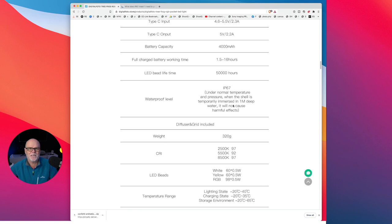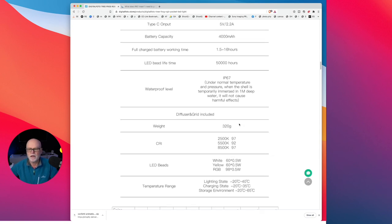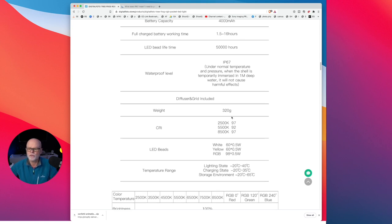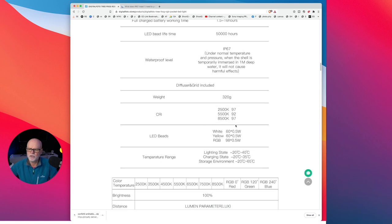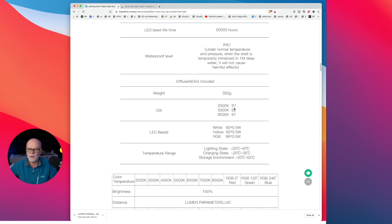The battery capacity is 4,000 mAh and fully charged it will work from 1.5 hours on full to 16 hours depending on if you take it down to its lowest setting. The LED life time is 50,000 hours so it'll last forever. And I did explain what the waterproof level means, so you could drop it temporarily in one meter of water. I'm not going to do that because I don't want to test it unless I have to.